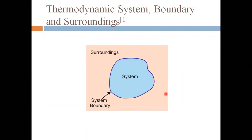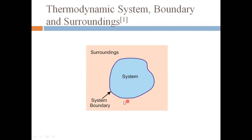Thermodynamic system, boundary, and surrounding — this topic is already covered in earlier lectures. The system is a region in space or a selected quantity of matter for thermodynamic study. The surrounding is what interacts with the system and is outside of it. The system boundary is a surface, real or imaginary, that separates the system from the surrounding.